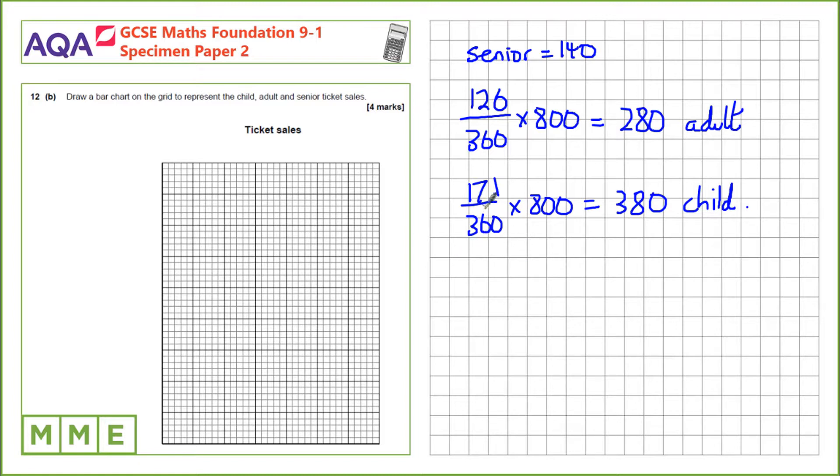Next, we need to make a bar chart. On this axis we'll have the number of tickets. We need to account for at least 400, so we'll go up to 400 on this axis in 50s. And down on this axis we'll have our three categories: child, adult, and senior.